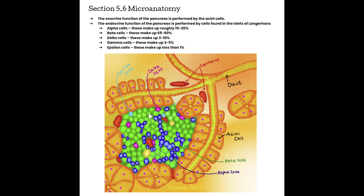The beta cells are the most abundant, making up about 65 to 80 percent of the islet of Langerhans cells, followed then by the alpha cells. These two types of cells do a lot of the endocrine work that the pancreas is responsible for. The rest of the cells have important work to do as well, but are less abundant within the islets of Langerhans.